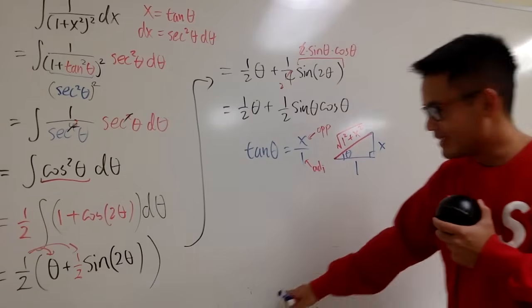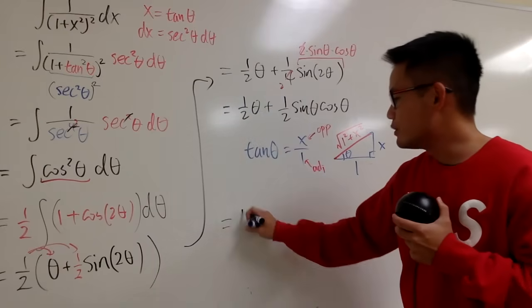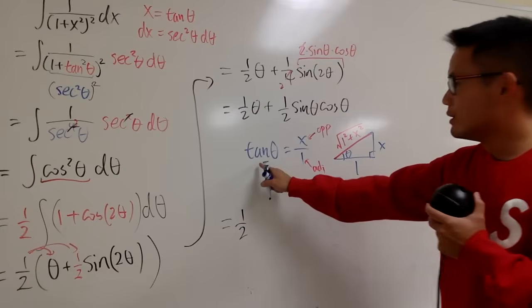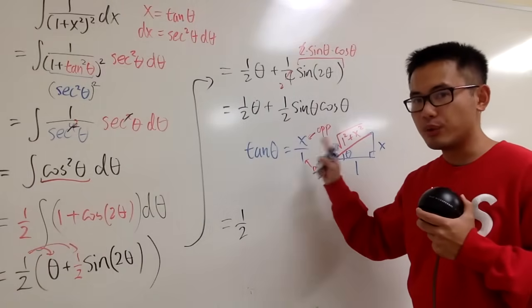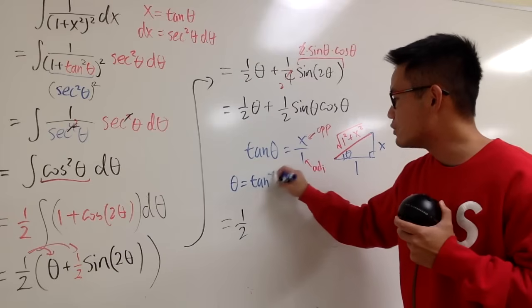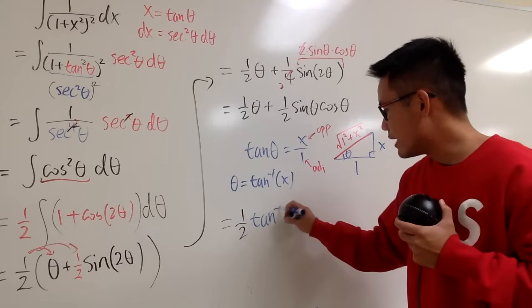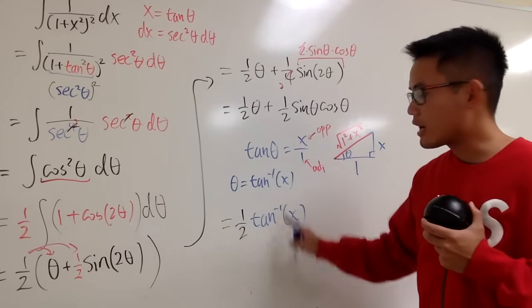All right, now, let's see what do we have. First of all, 1 half is just 1 half, but theta, tangent theta is equal to x. Of course, we can say theta is equal to the inverse tangent of x. So let's put that down right here. Inverse tangent of x for theta right here.